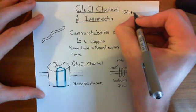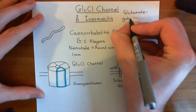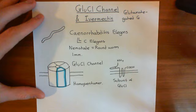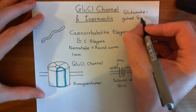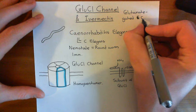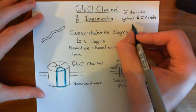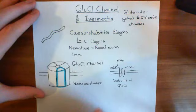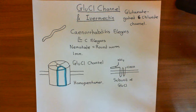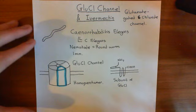Glutamate binds to the GluCL channel and causes it to open, allowing chloride ions to move into the cell. This is notable because we haven't seen any cis-loop ligand-gated ion channels gated by glutamate before, nor glutamate receptors that allow chloride in. It is an inhibitory receptor to glutamate — in vertebrates like humans, there are no ligand-gated ion channels that are inhibitory receptors for glutamate, though there are some metabotropic glutamate receptors that can have an inhibitory effect on the postsynaptic cell.